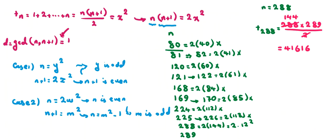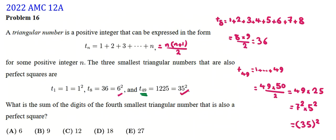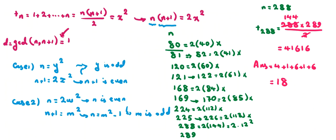The sum of the digits of 41616 is 4 + 1 + 6 + 1 + 6 = 18. Checking against the answer choices, the answer is 18. This number theory idea — analyzing the two cases from coprimality — is very useful and applicable to other competition problems.